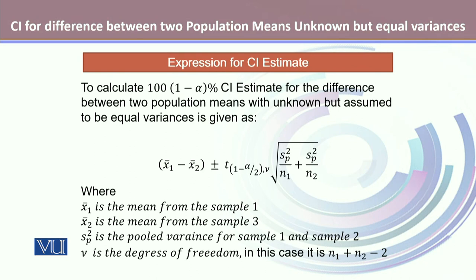The expression to calculate the confidence interval estimate is given by the estimate x̄₁ minus x̄₂, plus or minus t(1 − α/2) with ν degrees of freedom, multiplied by the standard error of the estimate.